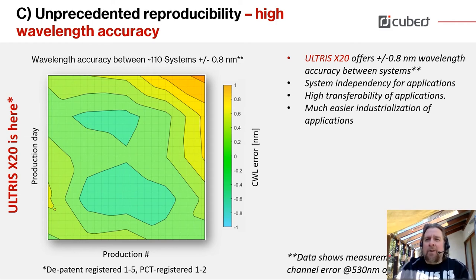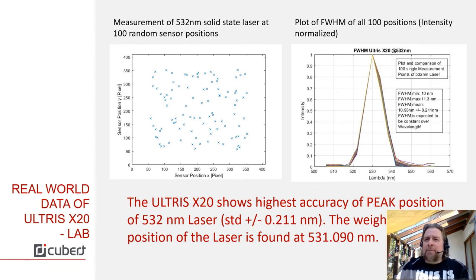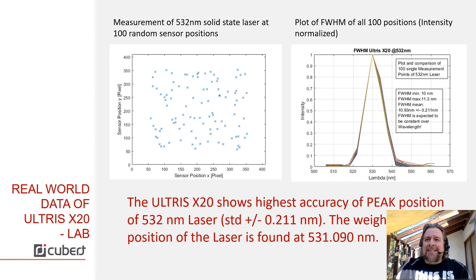Looking at real-world data of the Altwas X20, here's some lab data — a measurement of a 532 nanometer solid-state laser. We compare the full-width half-maximum of that laser across spatial positions, and we hit the same maximum everywhere. Looking more closely at the data, we found the laser wavelength at 531.09 nanometers, which is within one nanometer deviation. But can we achieve that in the field as well?